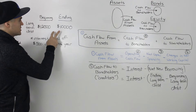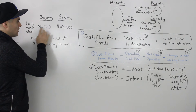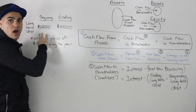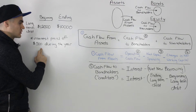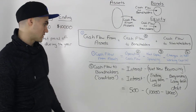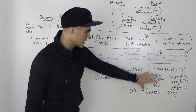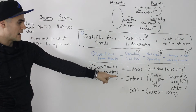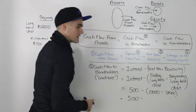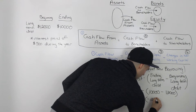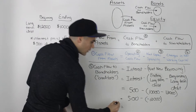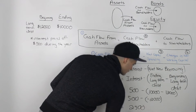Now let's do another example but switch these figures. The beginning figure is $12,000 of long-term debt and the ending figure is $10,000 — so the long-term debt went down instead of up. Interest is still $500. Plugging into the formula: $500 minus ($10,000 − $12,000) = $500 minus negative $2,000. Those two negatives turn into a positive, so the net cash flow to bondholders is positive $2,500.